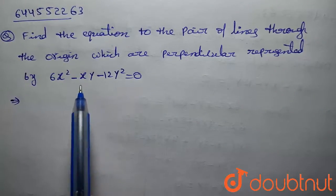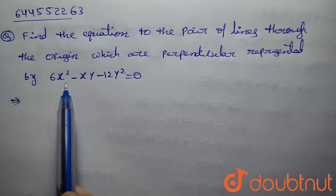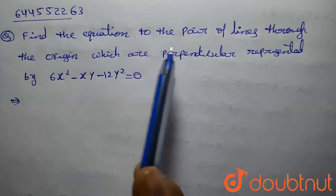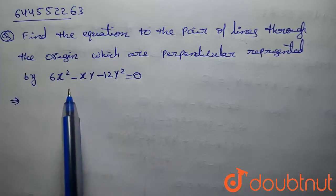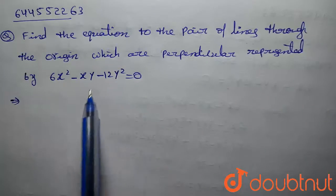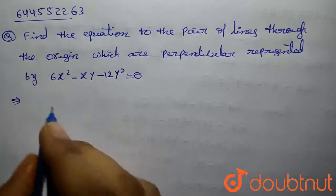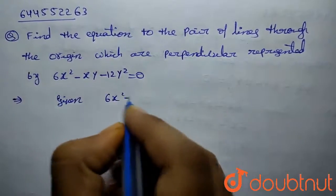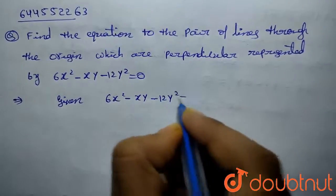For this, we need to find the equations of the individual lines within the given equation, and after that we need to find the perpendicular lines to each of those equations. After that, we multiply those two perpendicular equations together.